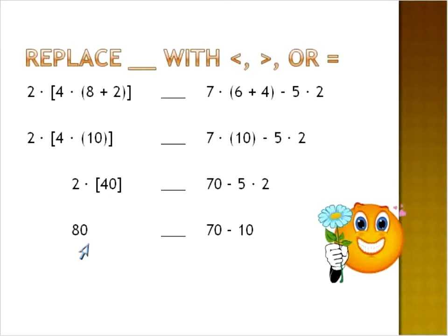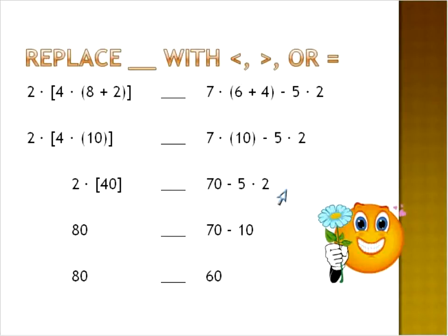Five times two is ten, and then we leave our subtraction until the end, giving us eighty and sixty. Which symbol would we use — less than, greater than, or equal to? We're going to use the greater than symbol because eighty is definitely greater than sixty, and so the opening goes towards the larger number.